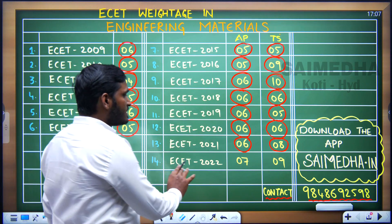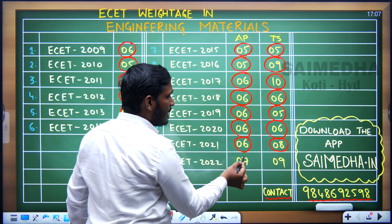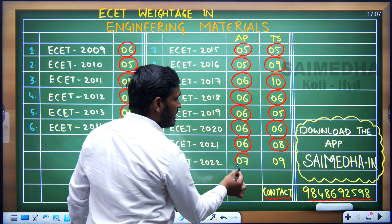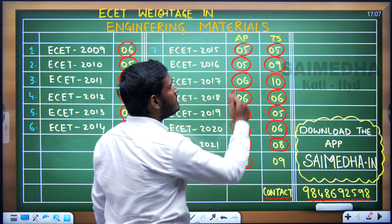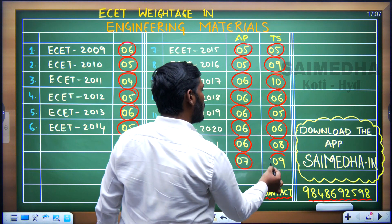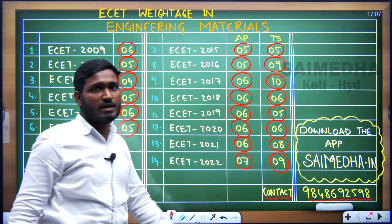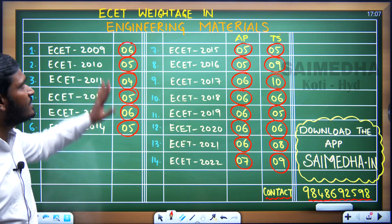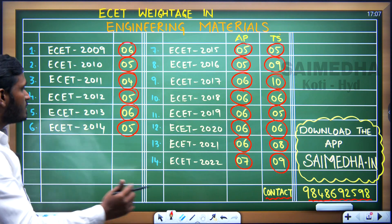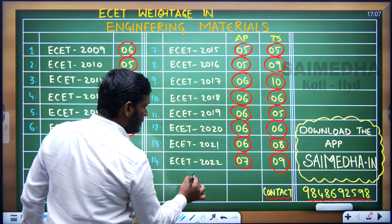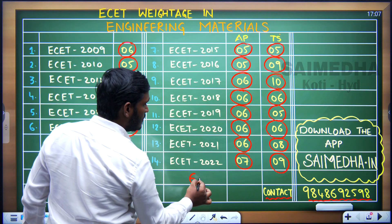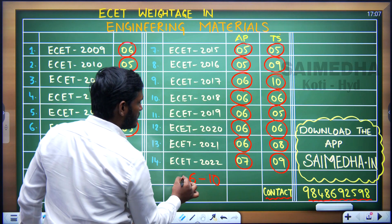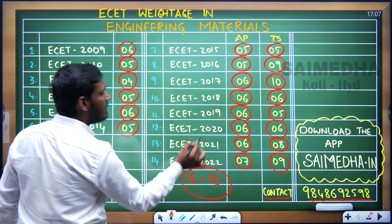In the last year, ESET 2022, in the AP paper 7 questions were asked from Engineering Materials, and from TS we got 9 questions. So, the average we can take from Engineering Materials is a minimum of 6 marks and a maximum of 10 marks.